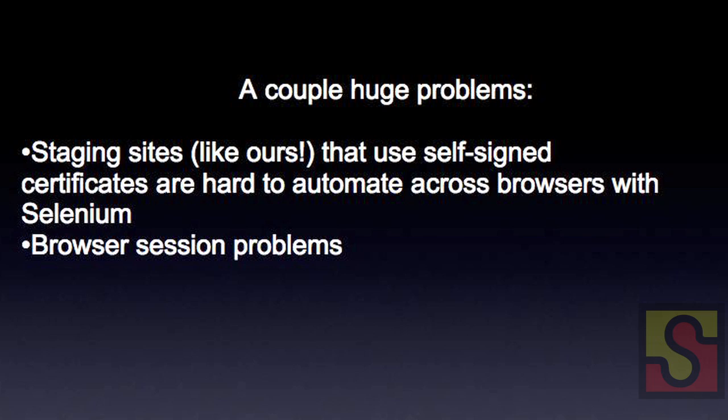Setting this up, we ran into a couple of problems. Some of our staging sites have self-signed certificates. For Firefox and IE, we have a way of actually making it work. But recently with Chrome, Chrome has a security model where you can't actually run tests on a staging site with a self-signed certificate — it just fails. So we had problems with that.